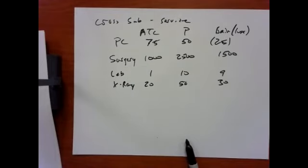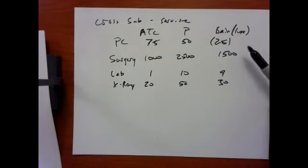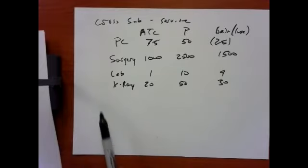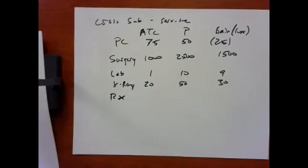That's an example of cross-subsidization — they charge very close to marginal cost on the ticket, which basically all goes back to the movie studio, and they make their money on the concessions. The same applies in health care. A lot of physician services — primary care and OB are good examples — lose money, but that money is made up in specialty care and ancillary services like lab, x-ray, and pharmacy. That's important to understand how hospitals set pricing.